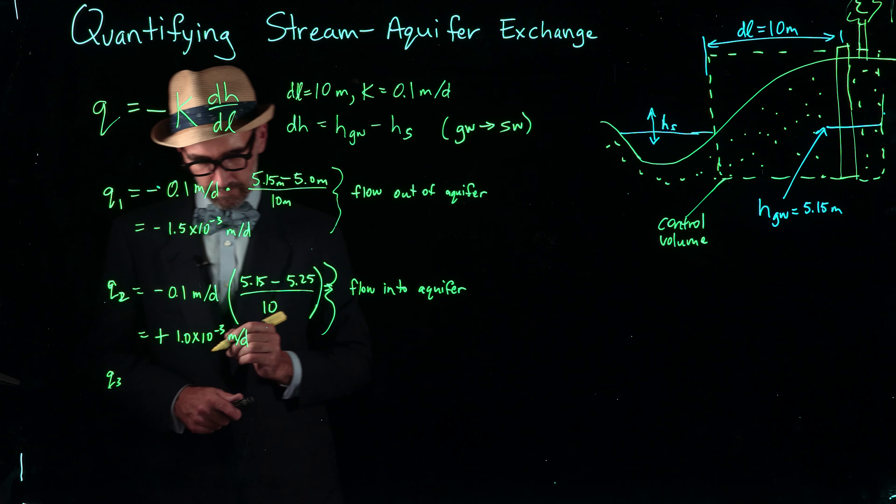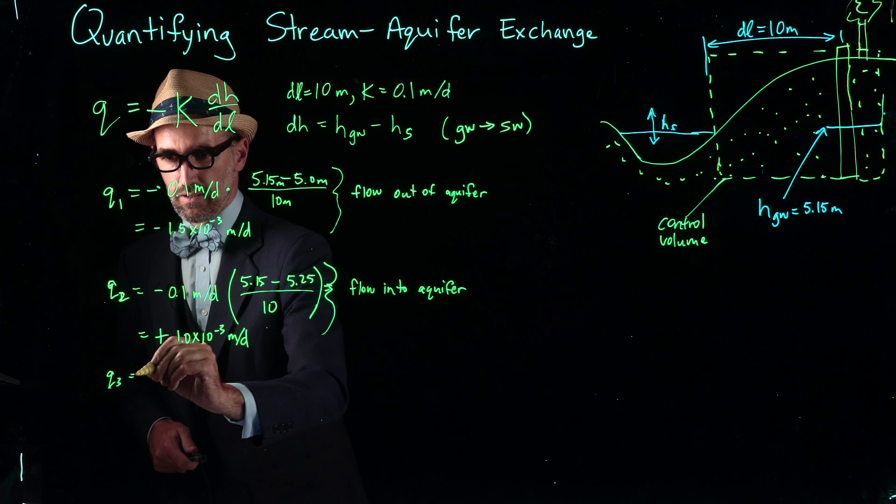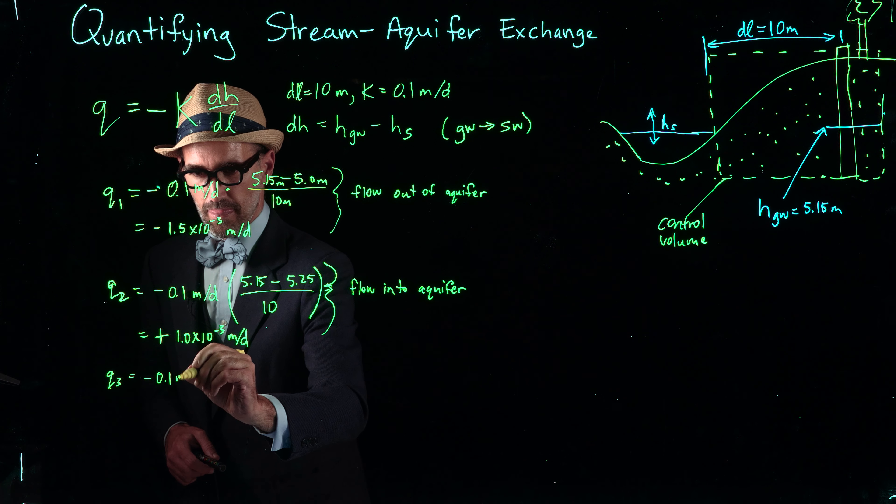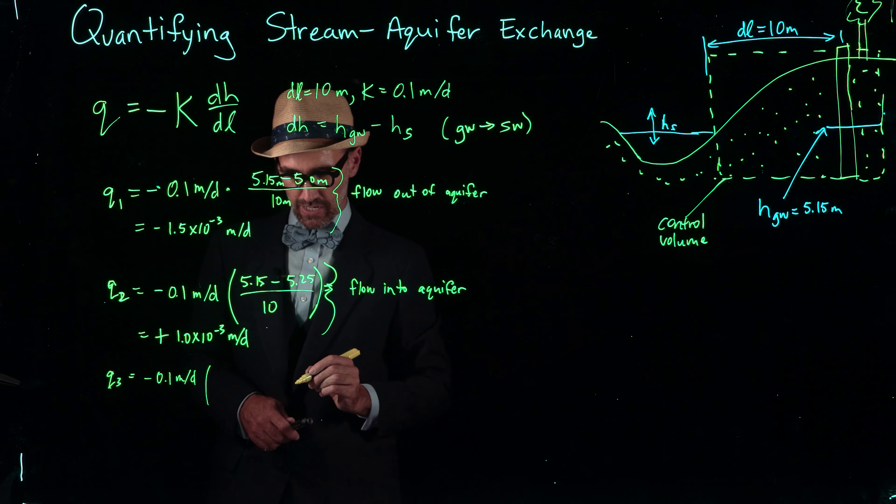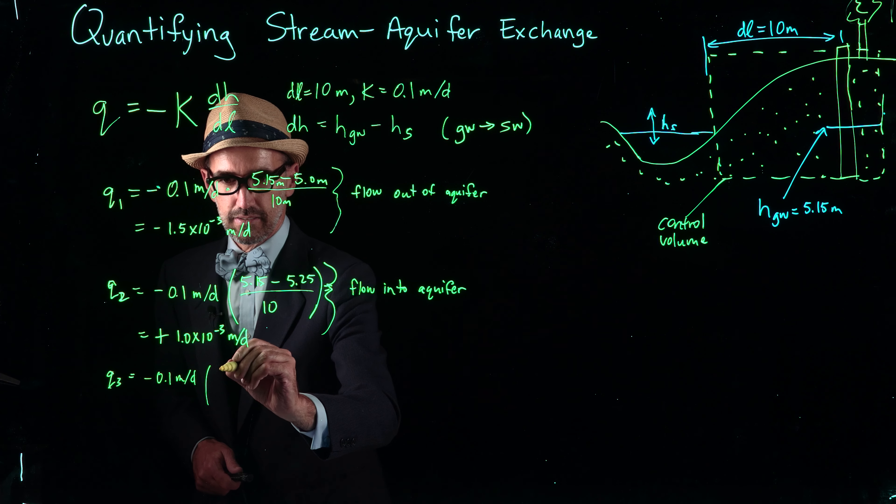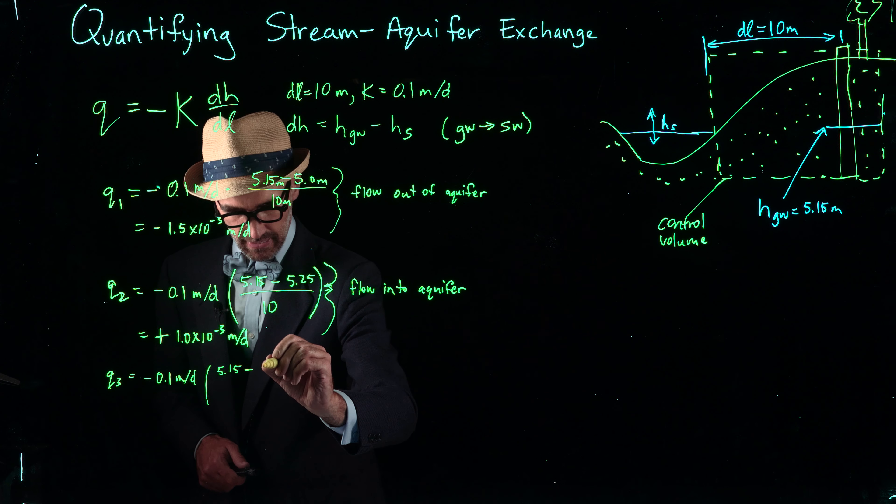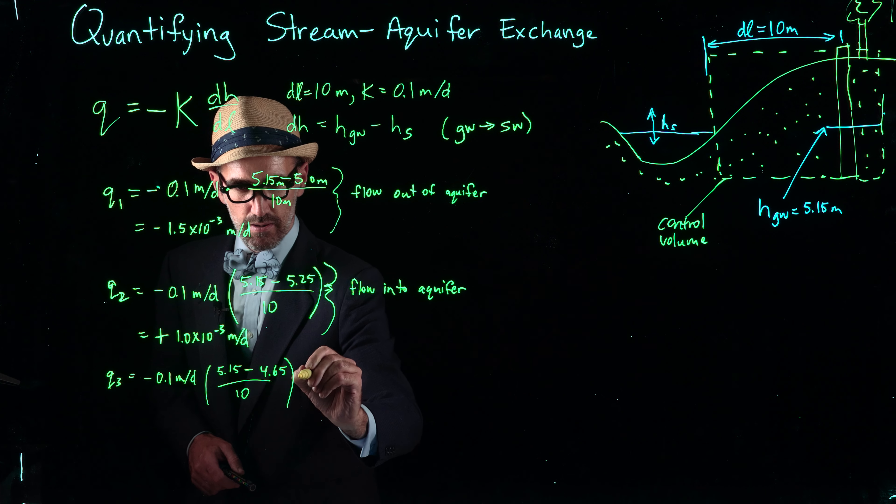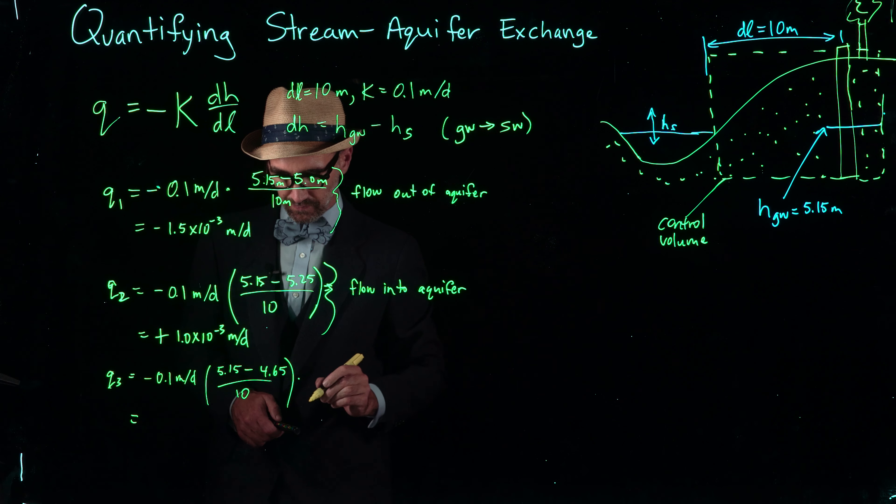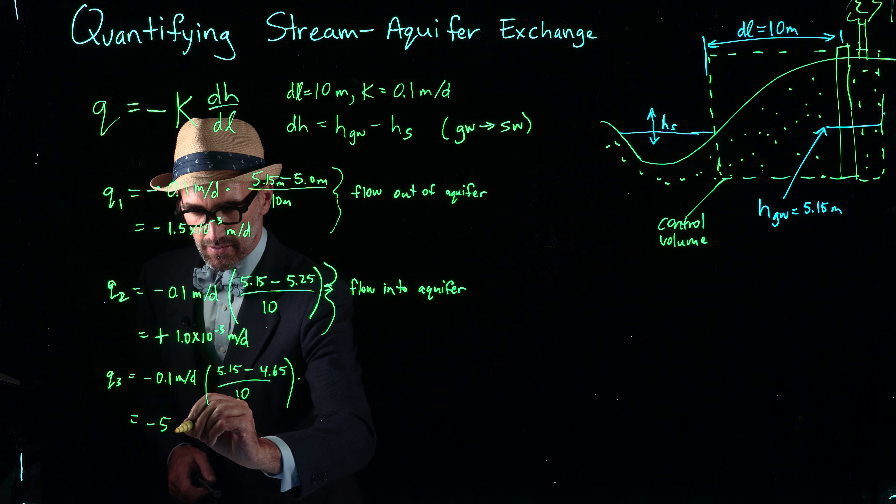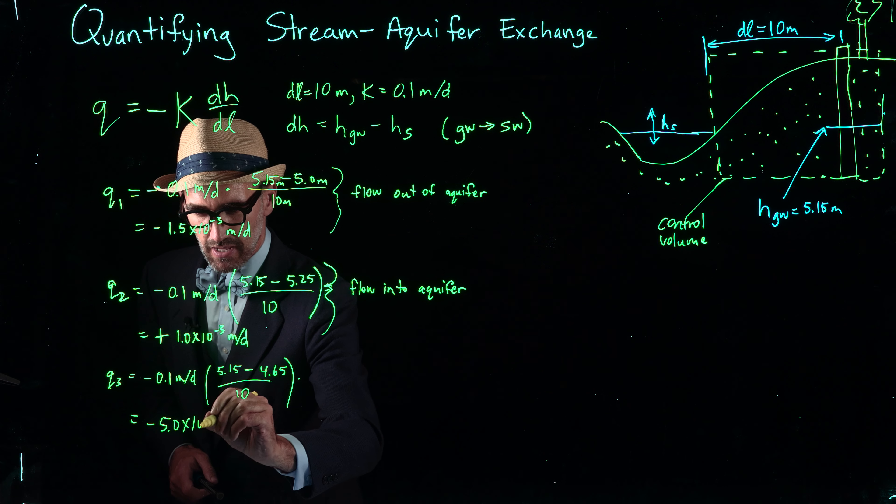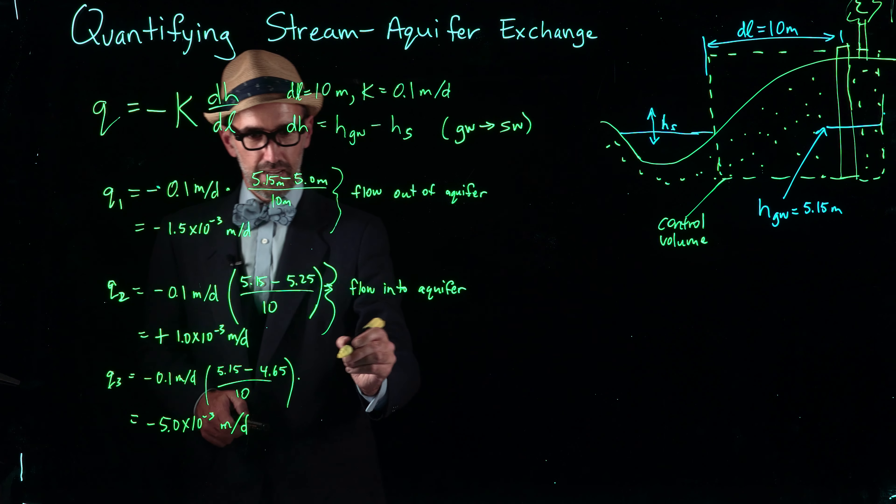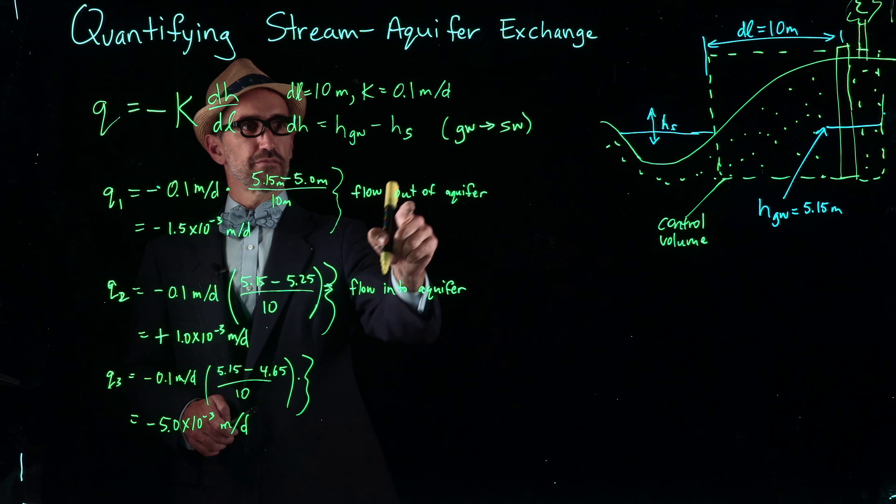Our third time, q3, after the storm, we have the same hydraulic conductivity, and our hydraulic gradient is 5.15 minus 4.65 divided by 10. That result is negative 5.0 times 10 to the negative 3 meters per day. Again, that's negative, so that implies flow out of the aquifer.